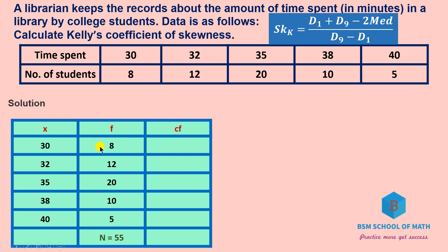For cumulative frequency, the first value is 8. Then 8 plus 12 is 20. Then 20 plus 20 is 40. Then 40 plus 10 is 50. Then 50 plus 5 is 55.